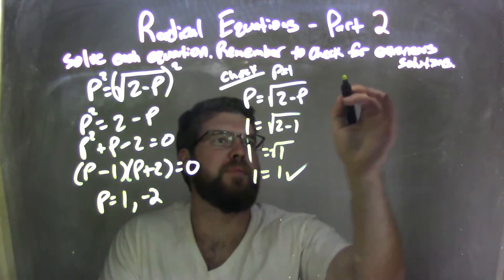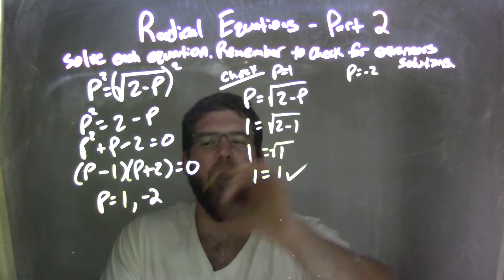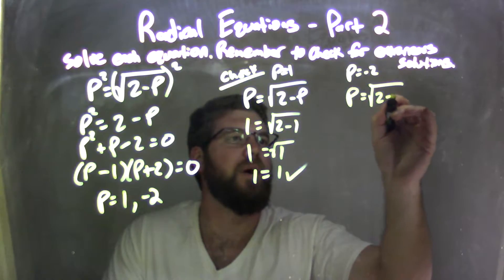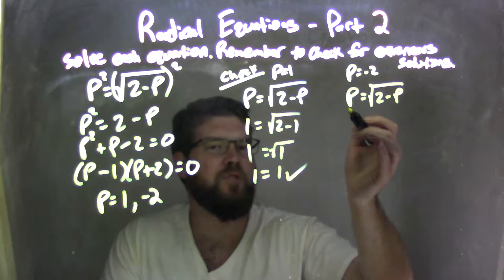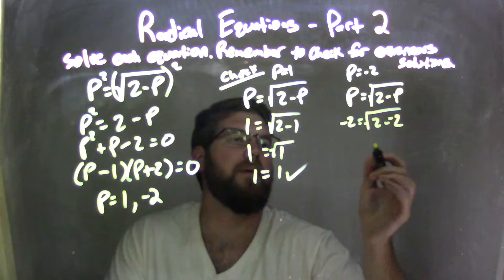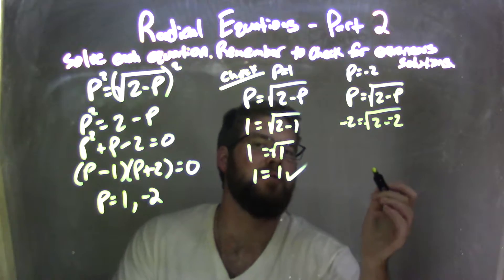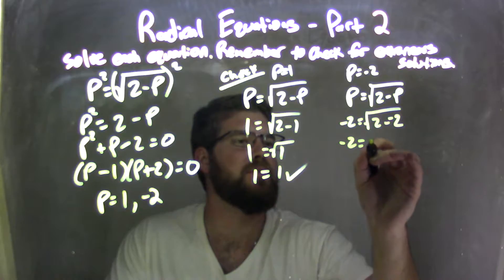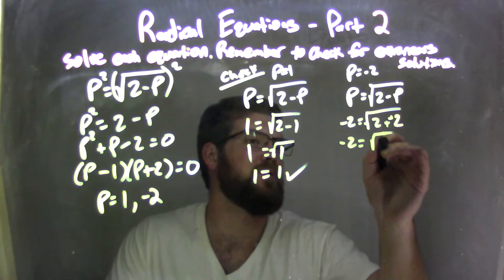So let's check negative 2. So if p is negative 2, does it also come out to be true? So I have p equals square root of 2 minus p here. I'm going to plug negative 2 in for p. So negative 2 equals 2 minus negative 2. Well, 2 minus a negative 2, minus a negative plus a positive. So negative 2 equals square root of plus a positive. The square root of 4 is 4.